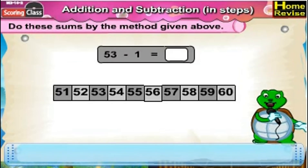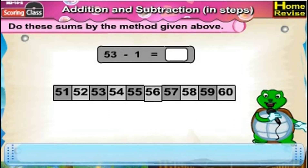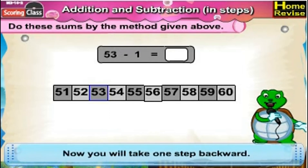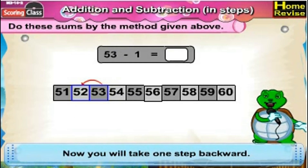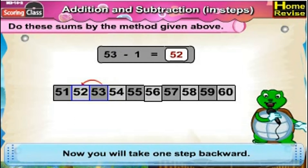Number 4: 53 minus 1. You're at 53. Now you will take one step backward, so 53 minus 1 would be 52.